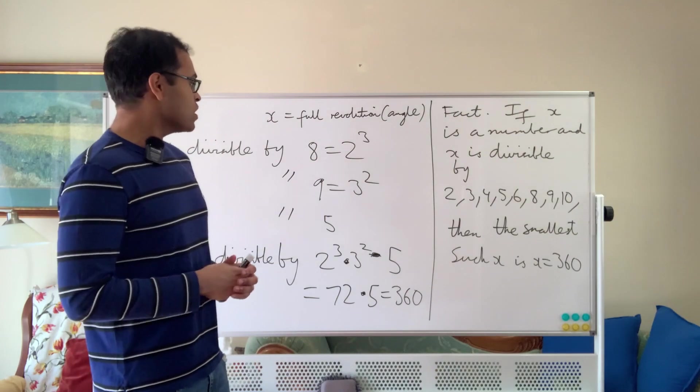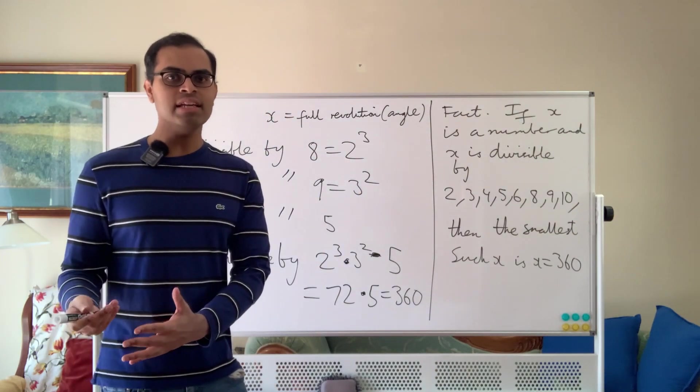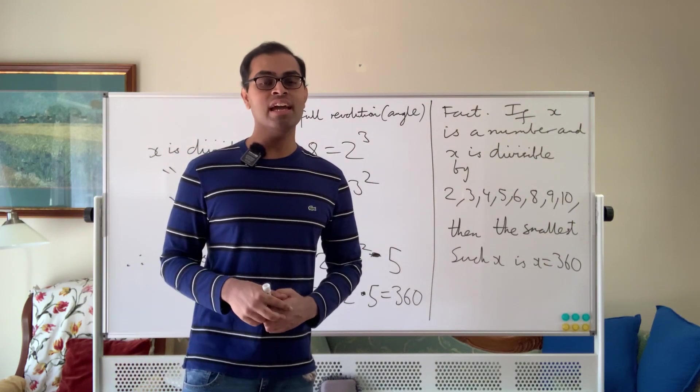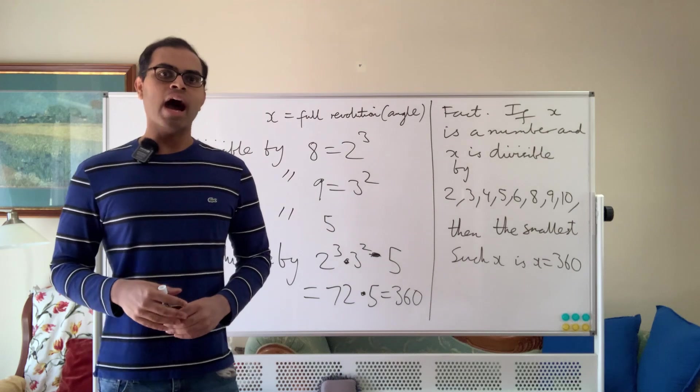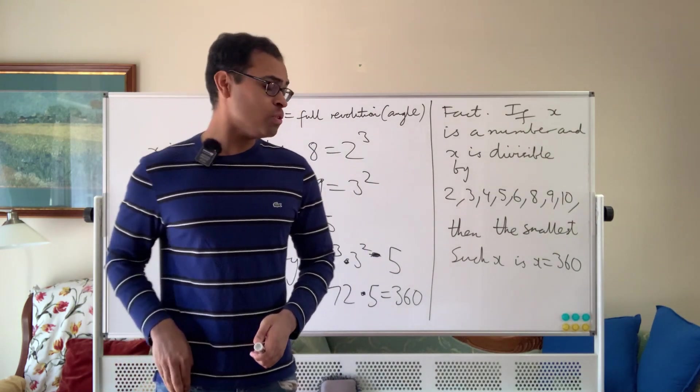So this is why we call a full revolution 360, which means the right angle is 90. Whatever stage of math education you're in, it's a very natural question, came up to me recently, I didn't know the answer, thought about it. It's a natural answer, I looked up online as well. It's a pretty cool way of looking at it.